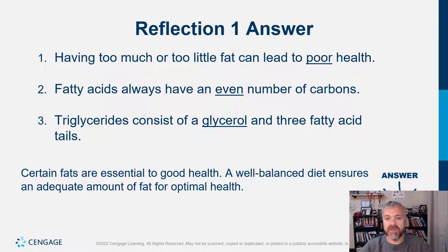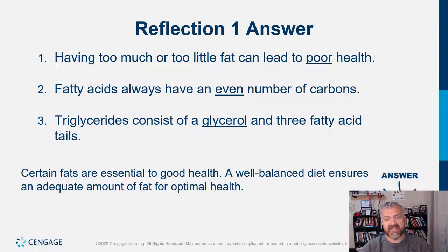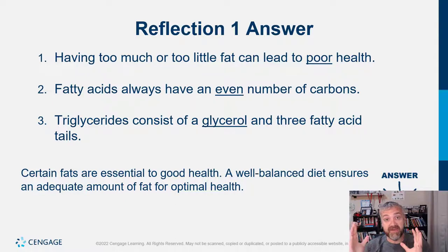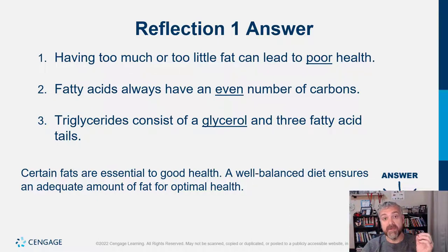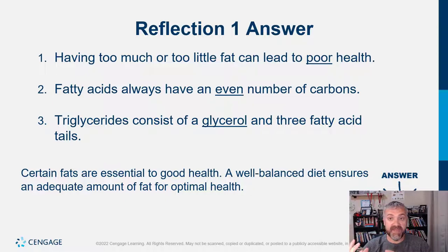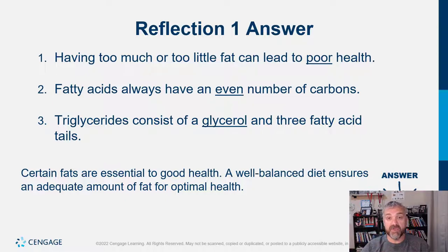Fatty acids always have an even number of carbons because they're metabolized in pairs. Triglycerides consist of a glycerol backbone and three fatty acid tails. About 6% of the energy stored in your body is in glycerol. When you break down fats for fuel, you burn those fatty acid tails, and then glycerol can become glucose through gluconeogenesis. If your body isn't getting enough carbs from the diet, it can turn the glycerol backbone into glucose and burn it for fuel.